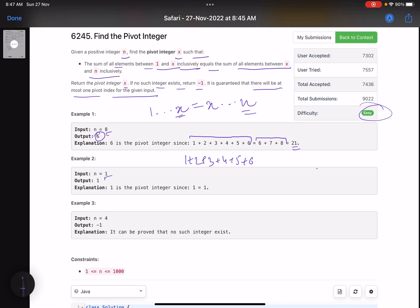What about n=1? In this case, 1 will be the answer because sum of 1 to 1 equals sum of 1 to 1. The pivot integer is 1.